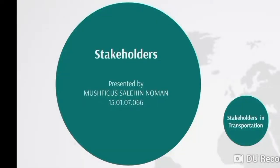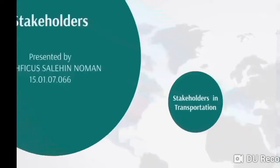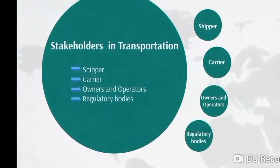Stakeholders in transportation. Stakeholders means a group of organizations or systems that can be affected by an organization's actions. In transportation, it is affected by transport. There are four parts: shipper, carrier, owners and operators, and regulatory bodies.